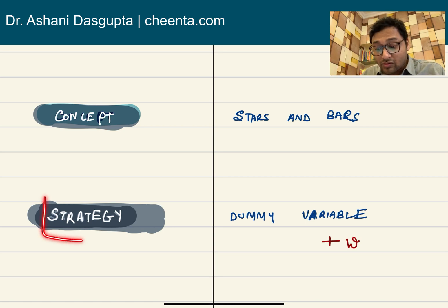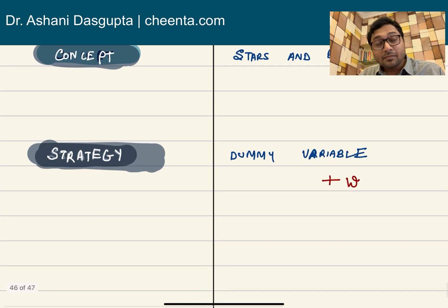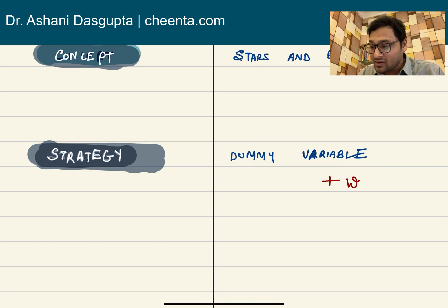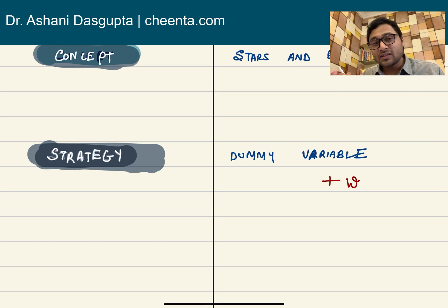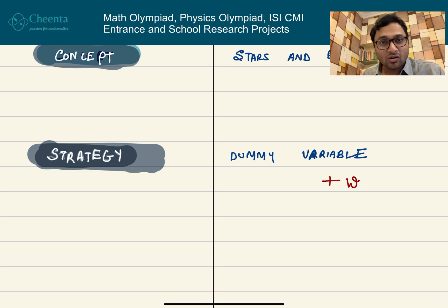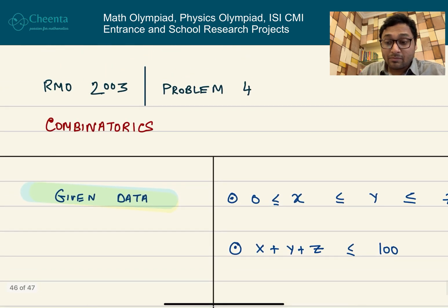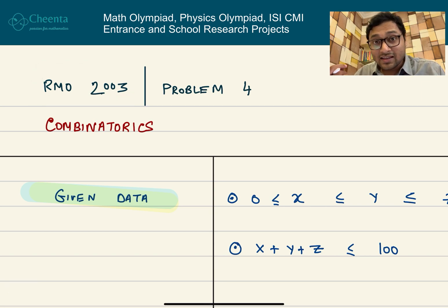We will also talk about a problem-solving strategy that is useful not only in combinatorics but also in number theory and other parts of mathematics. It's called introducing the dummy variable. I will tell you more about it as we progress, and at the end I will give you a challenge problem. Remember, we will learn concepts only in the context of problems — that's how we actually learn concepts.